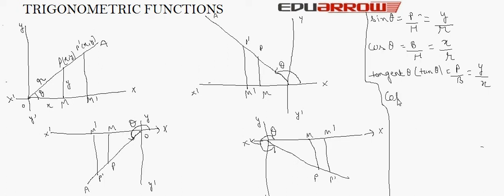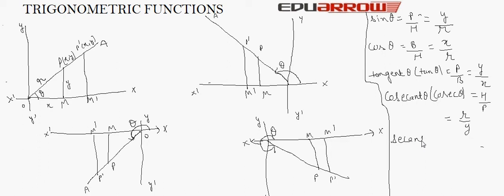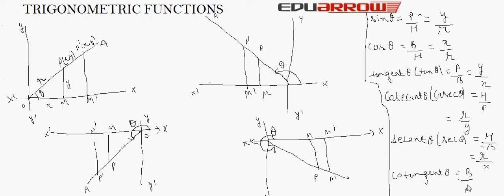The next ratio is cosec theta, which equals hypotenuse upon perpendicular, that is R over y. Next is sec theta, which equals hypotenuse over base, that is R over x. Cotangent of theta equals base over perpendicular, which is x over y.